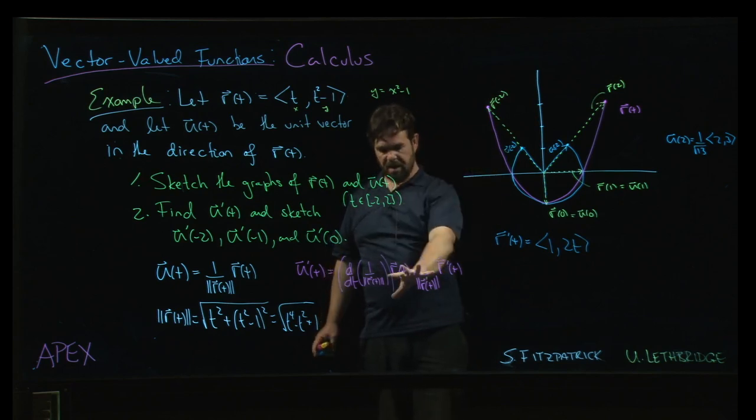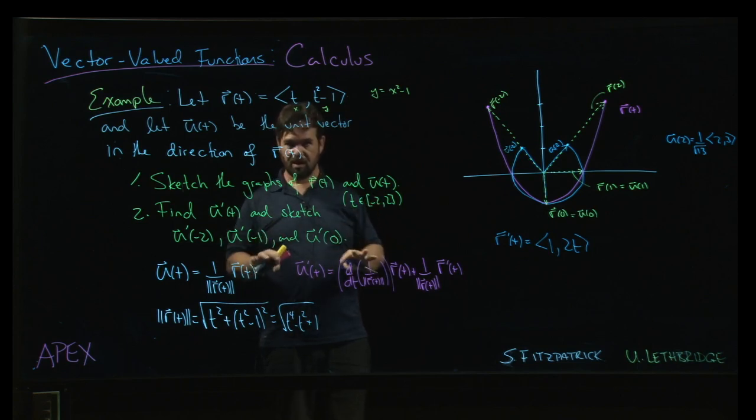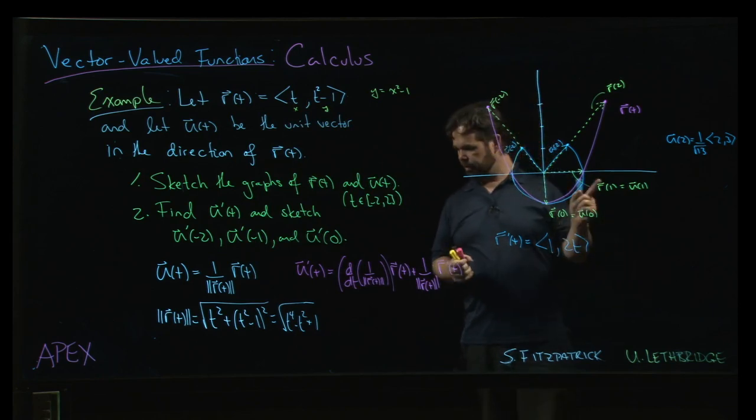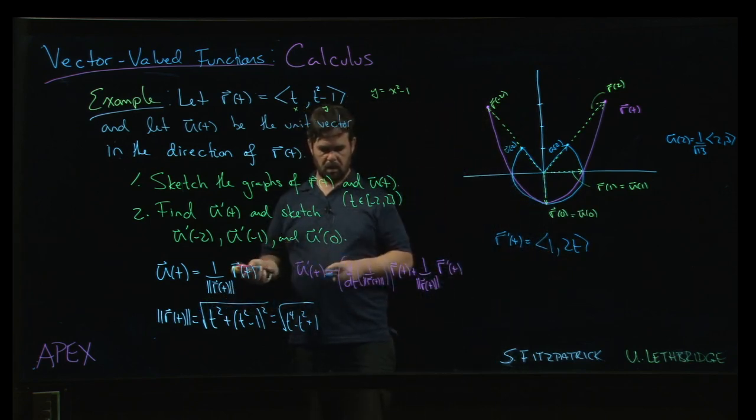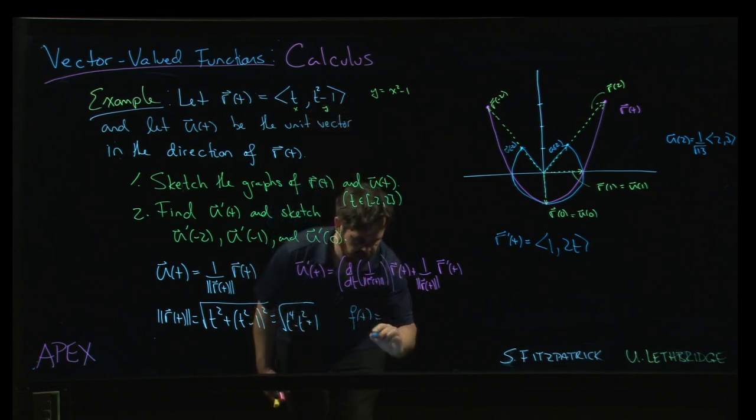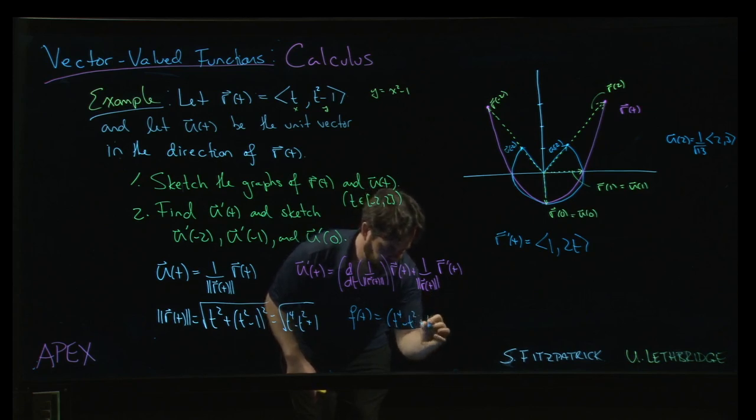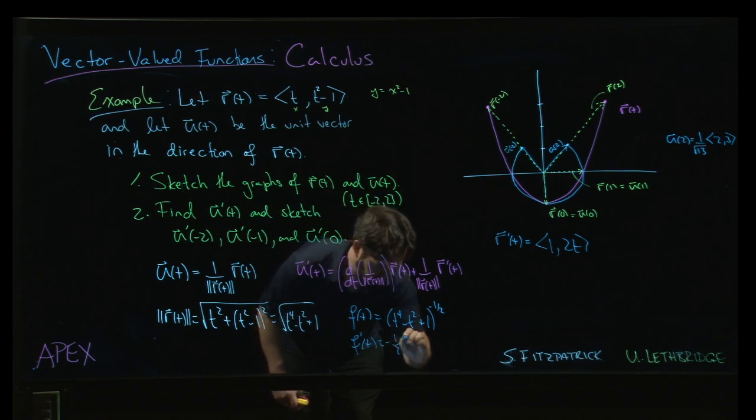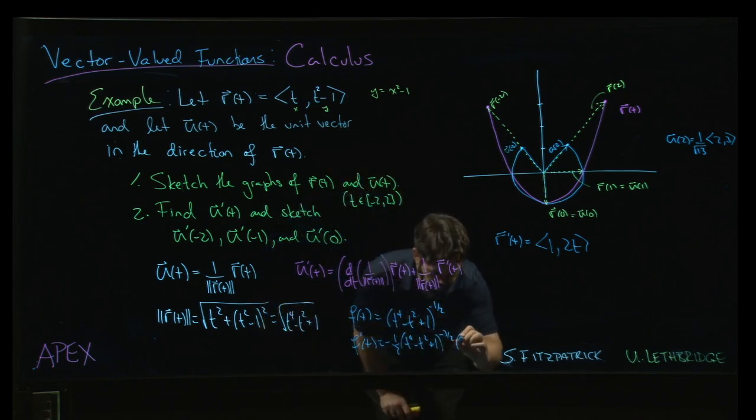And for the magnitude of r, you feel like you should be able to get away with some kind of chain rule thing here. It doesn't quite work out. But we can kind of get there. So here's the magnitude of r. The derivative of that to the minus 1 half: minus 1 half times t to the 4 minus t squared plus 1 to the minus 3 halves times the derivative of the inside, which is going to be 4t cubed minus 2t.